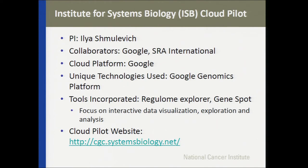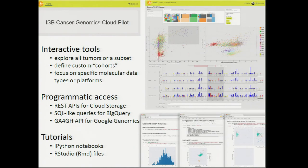From ISB, the PI is Ilya Shmulevich, with collaborators Google and SRA International, and their platform is Google. They're using the Google Genomics platform as a unique technology, and have incorporated tools including Regulome Explorer and GeneSpot. ISB is really focusing on interactive data visualization, exploration, and analysis. Their Cloud Pilot website is cgcsystemsbiology.net. The interactive tools allow you to explore all tumors or a subset, define custom cohorts, and focus on specific molecular data types or platforms. There is also programmatic access including REST APIs for cloud storage, SQL-like BigQuery queries, and the GA4GH API for Google Genomics.